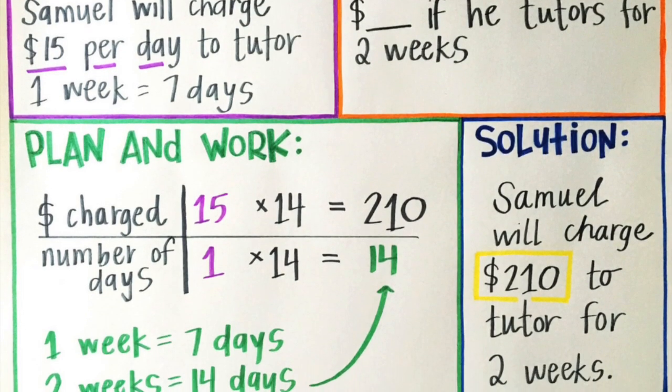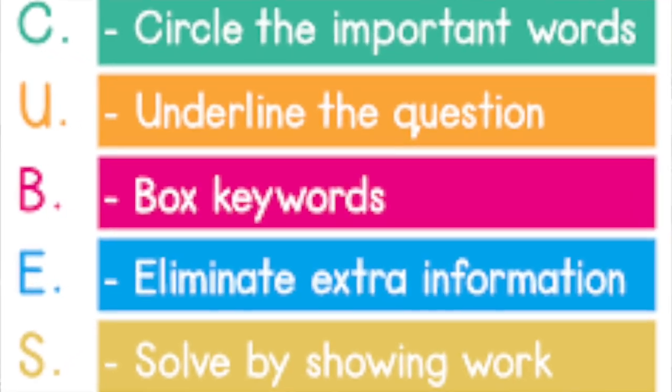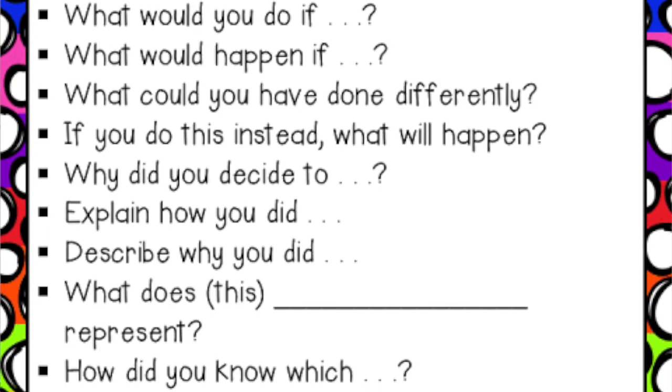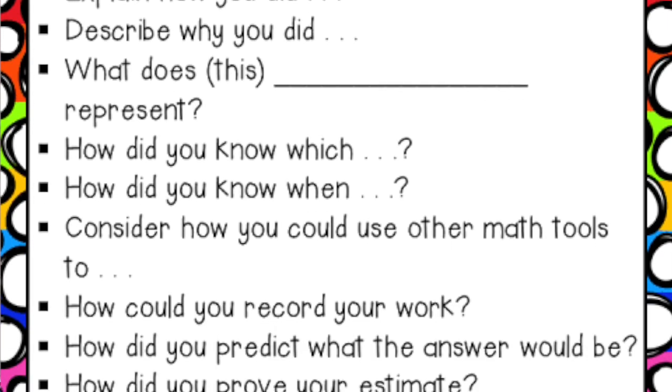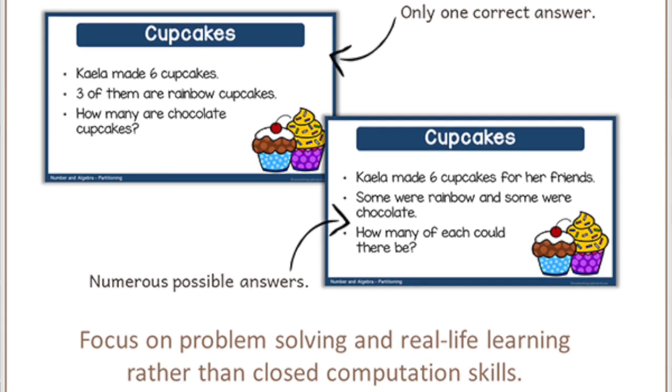Even using students' names or another type of real-world application is a great way to get students involved in math learning. Talk about problem-solving steps — I recommend using acronyms for that because it'll really help students to memorize those certain steps. This is great for warm-up activities or review as well, and it's also a great way to ask open-ended questions where students really get to explain their reasoning and how they got to a particular answer.